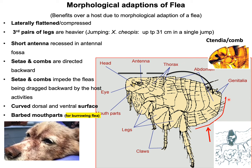Some fleas, known as burrowing fleas, can burrow into the skin and remain attached at the site of attachment for a considerable time, aided by barbed mouth parts. These are the morphological modifications by which the flea gains advantages over its host.